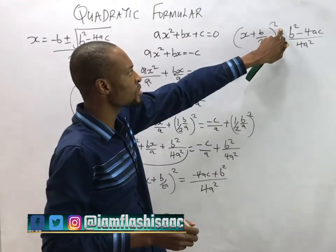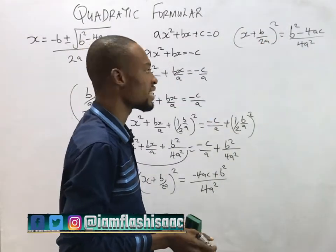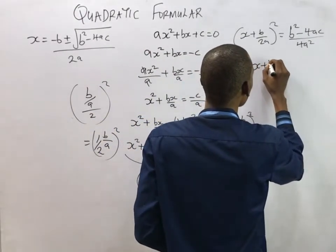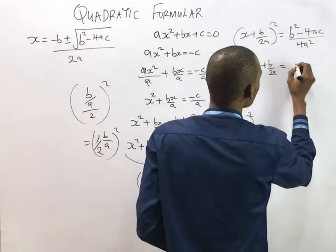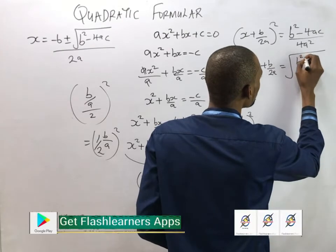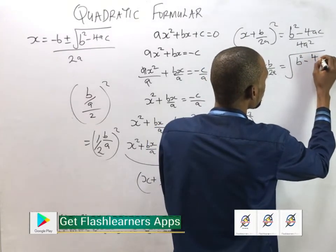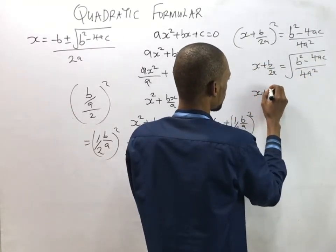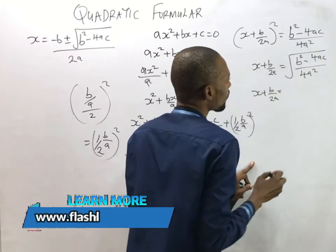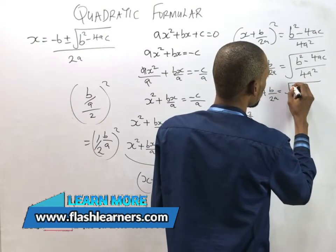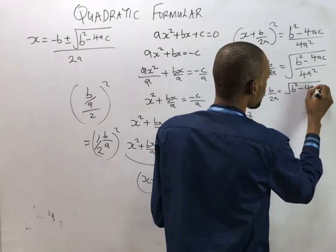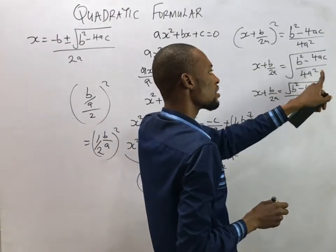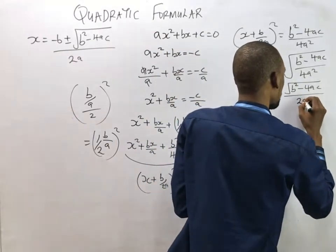To remove the square from the left-hand side, we take the square root of both sides. Taking the square root of both sides gives us: x plus b over 2a equals the square root of (b² minus 4ac) all over the square root of 4a². The square root of 4 is 2, and the square root of a² is a, so the right-hand side simplifies to the square root of (b² minus 4ac) all over 2a.